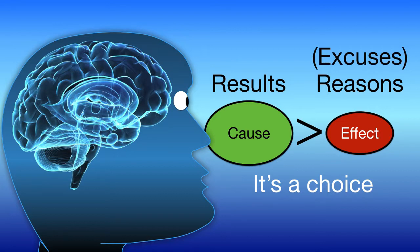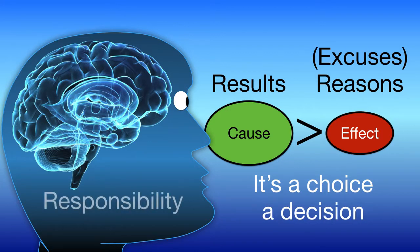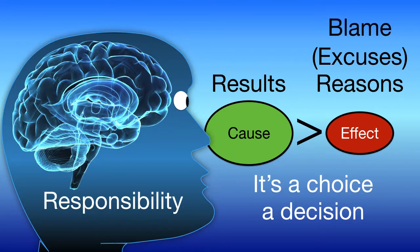Being at cause is a decision that we take. We can take responsibility, or we can decide not to. If we blame other people or things for our mistakes and don't take responsibility for them, then we'll continue to make them.